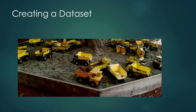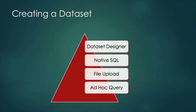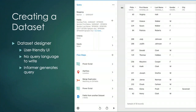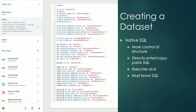Let's talk about the process of creating a data set. There are a couple of different ways you can create data sets. We have a data set designer, you can write native SQL, you can upload files, and we can also convert ad hoc queries into data sets. The data set designer is built such that users can create data sets using a user-friendly interface without having to know any query language. They're able to point and click and select the data they want to see, add any criteria, and build any flow steps into the data set that they need. Informer then generates the actual database query in the backend and executes that on the data source when they run the query.